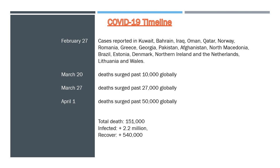More cases were reported in Turkey and Pakistan, while Iran registered a total of 14,991 infections and 853 deaths. Meanwhile, as the number of cases worldwide surpassed 600,000 with more than 27,000 deaths on March 27, India and South Africa joined the countries to impose lockdowns. Kenya, Kazakhstan, and Honduras reported their first deaths, while Johnson announced he had tested positive.